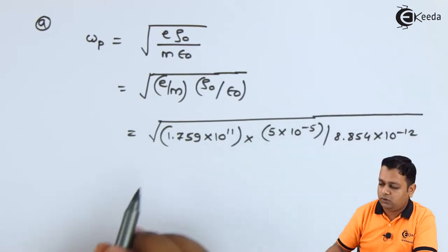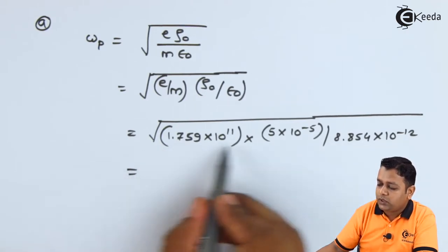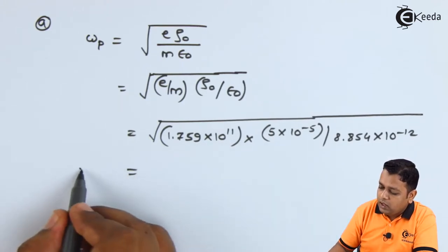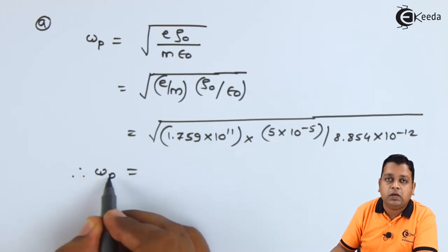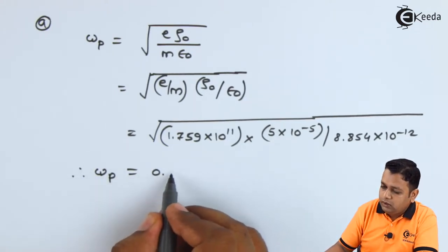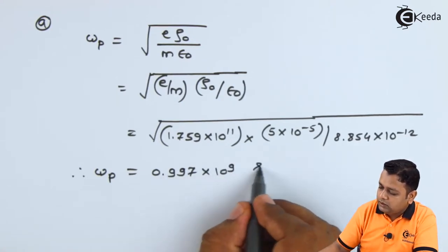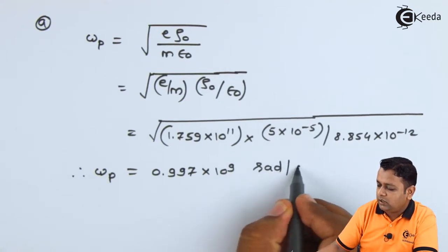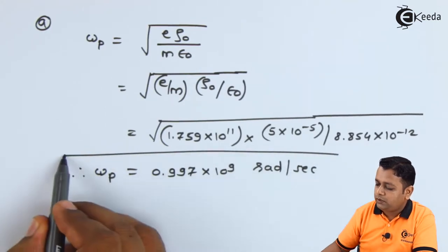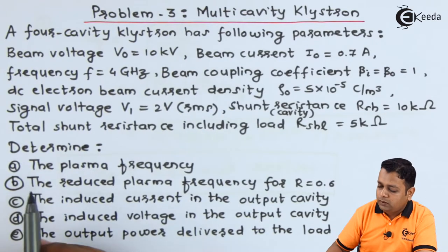This is all under the square root, with the denominator also completely inside the square root. After calculation, the plasma frequency ω_p is computed as 0.997×10⁹ radians per second. This completes part A of the problem statement, and the plasma frequency value is now available.